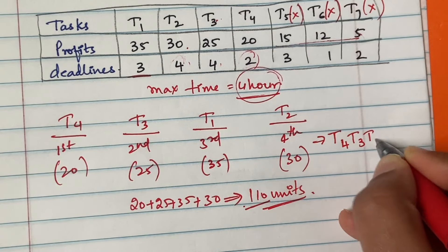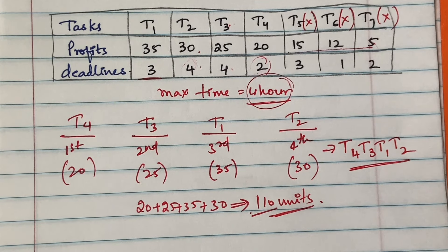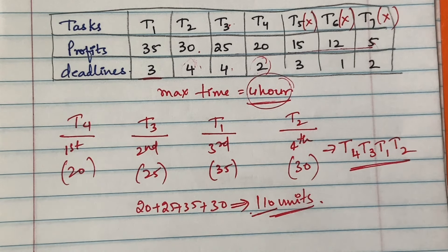The final job sequence for Example 2 is: t4, t3, t1, t2. This is how you solve the job sequencing with deadlines problem using the greedy method. These two examples should be good enough to answer exam questions on this topic. Thanks for watching — if you have any questions, leave them in the comments and I'll reply.